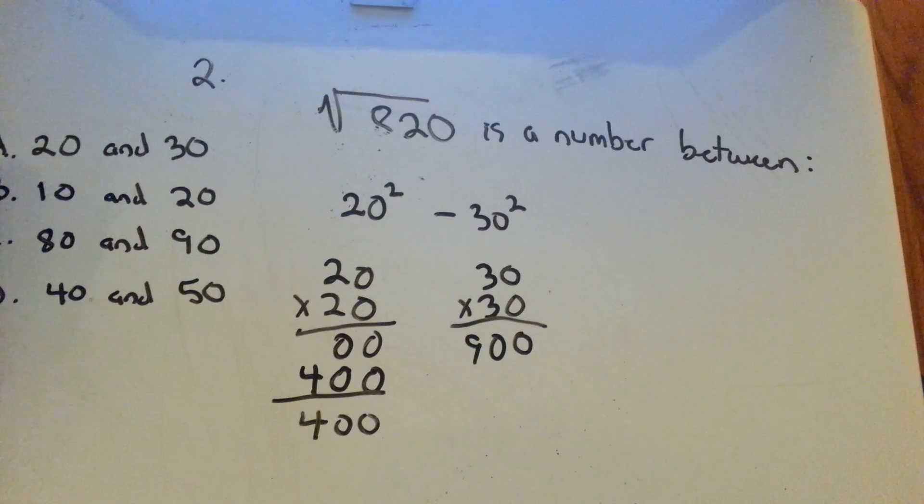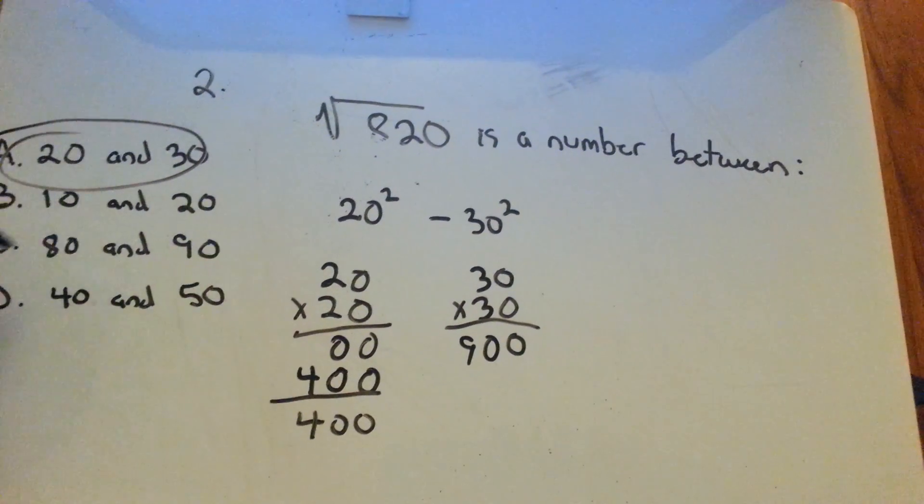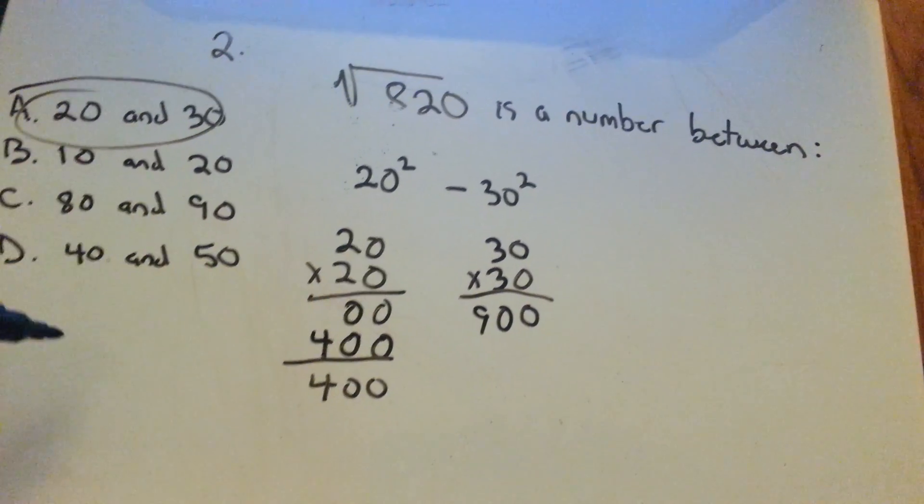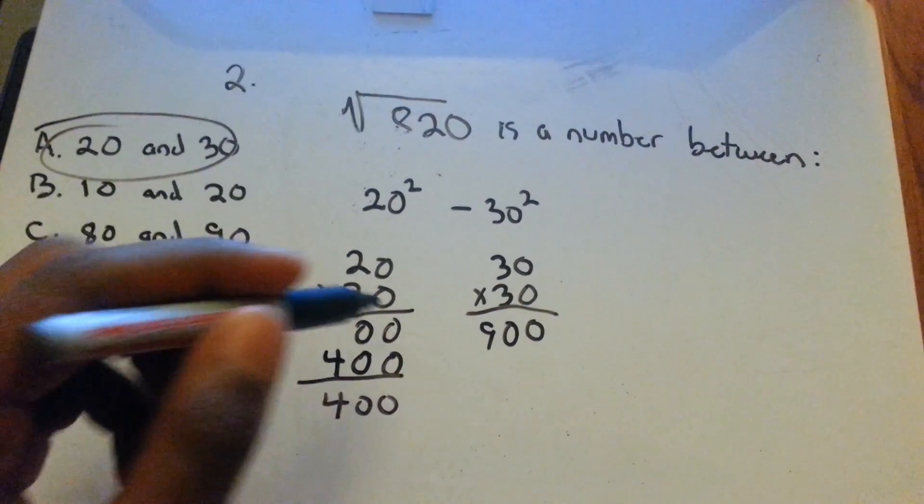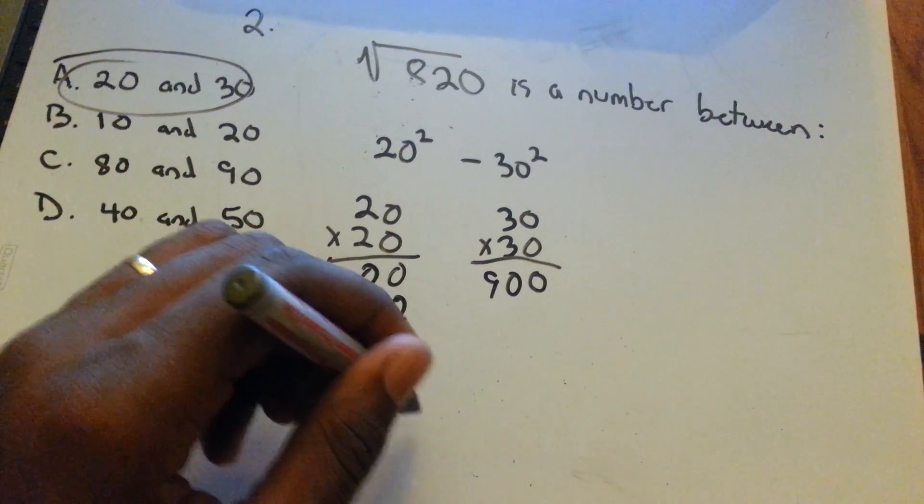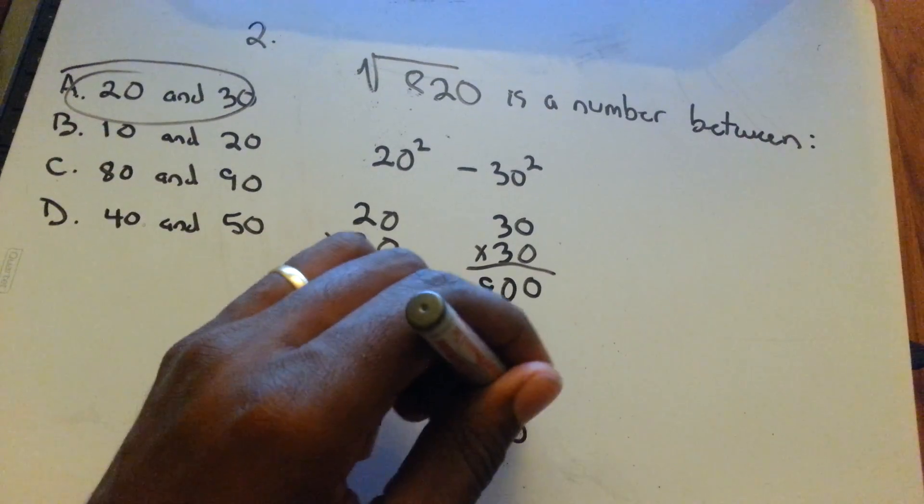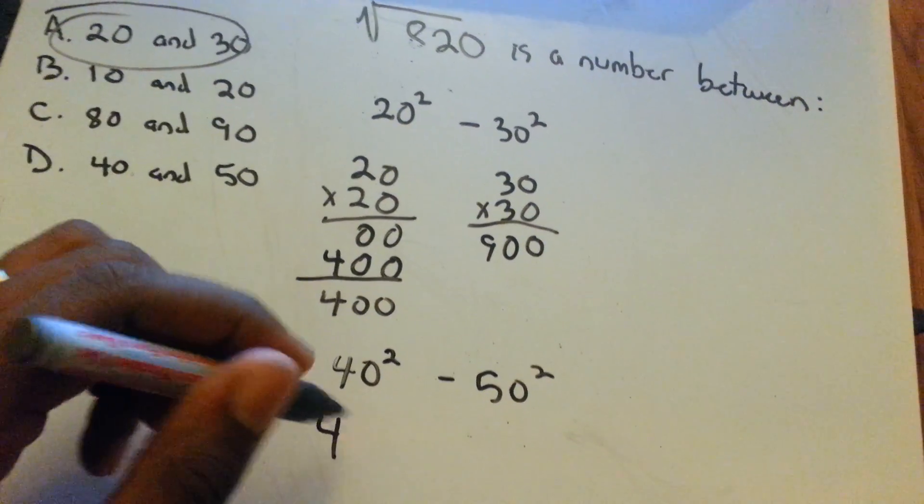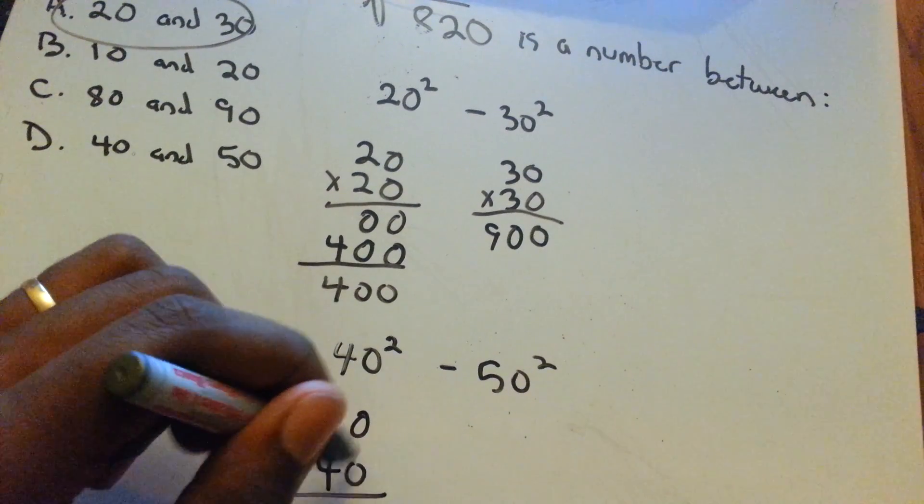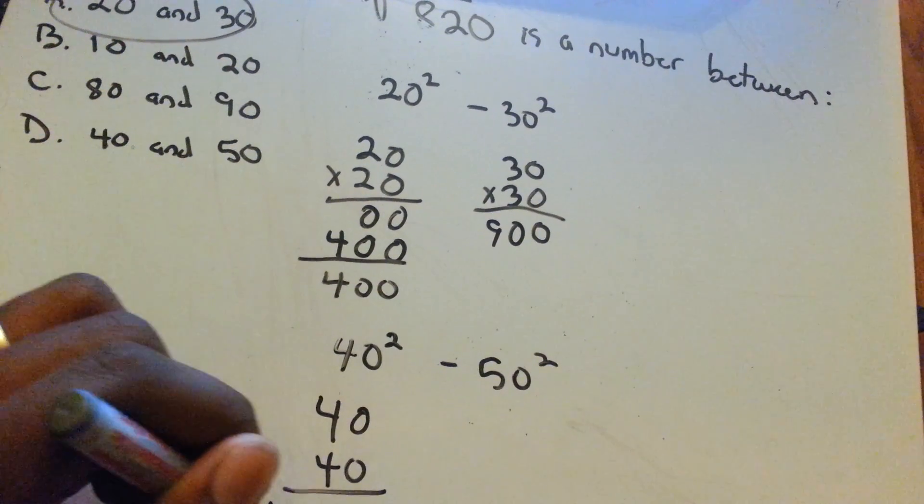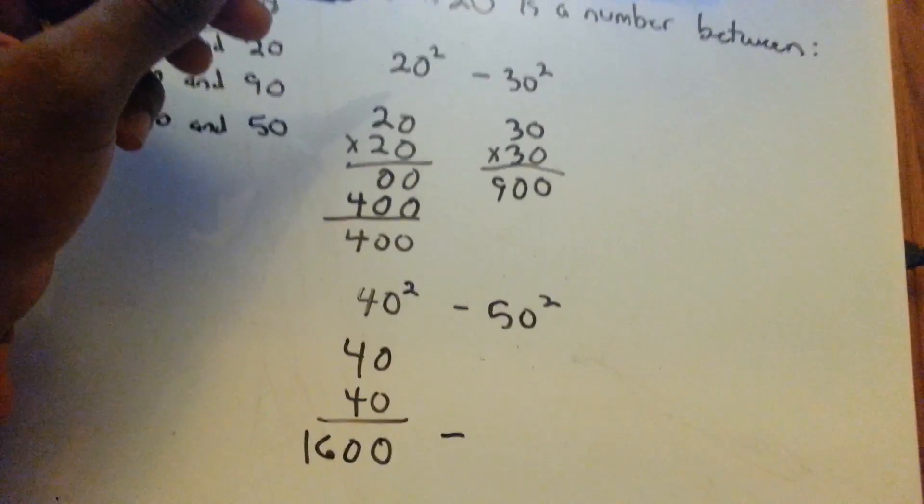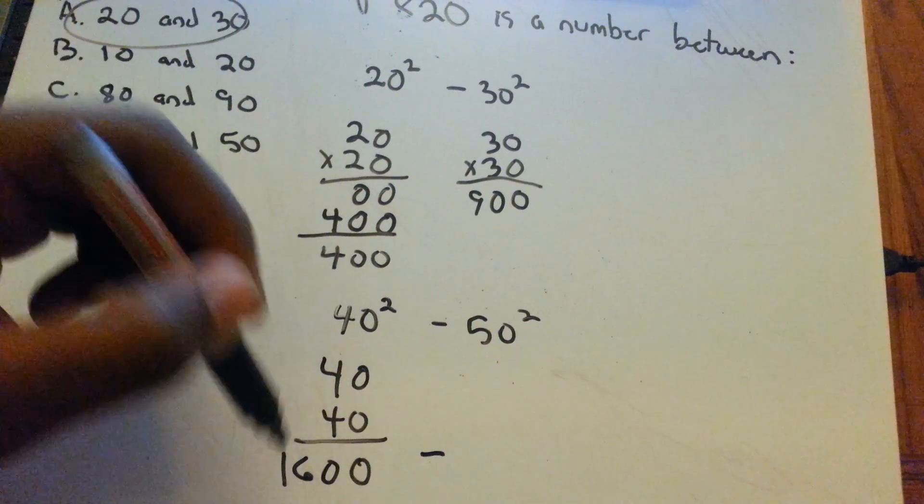It's actually the first one that we did. But just to show you one that wouldn't work out, we'll take 40 and 50 here and say is 820 between 40 squared and 50 squared. Take 40 times 40 - just put the 0 placeholder there, 4 times 4 is 16. You can see right now it's already not going to be because 40 squared is 1,600.